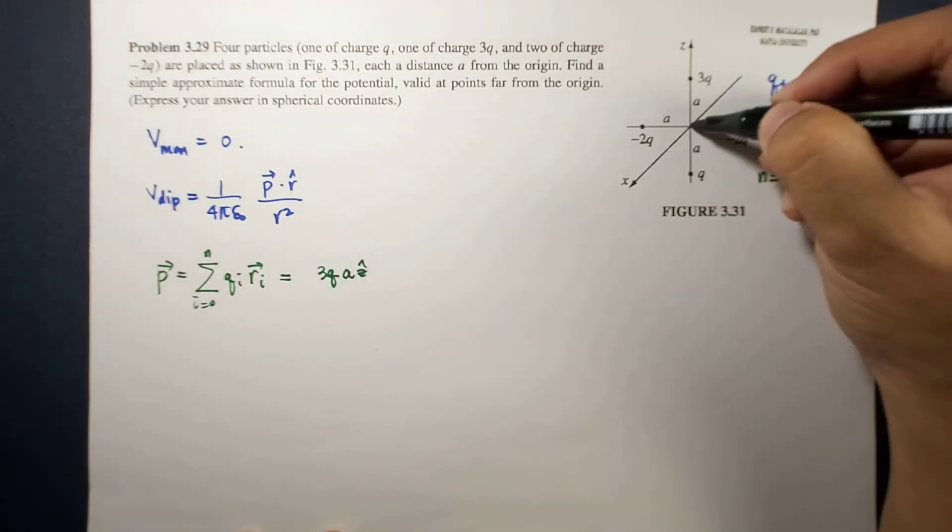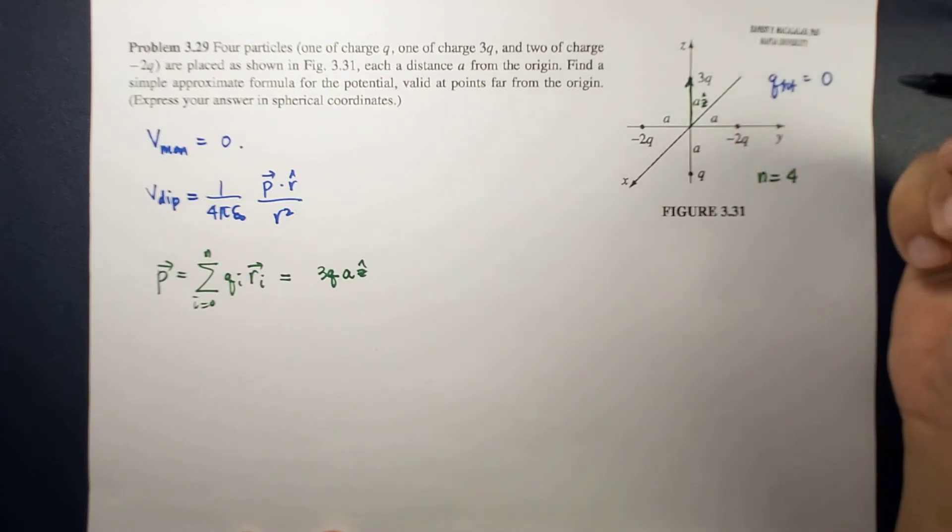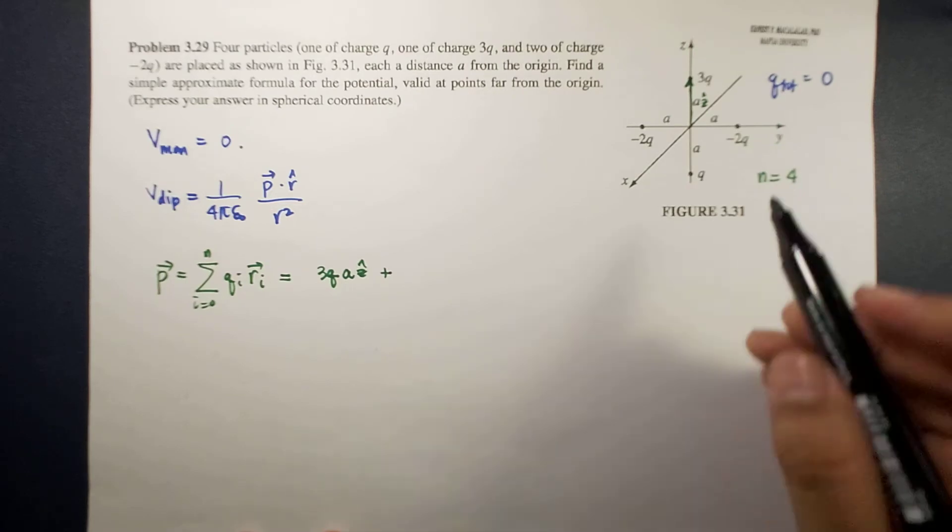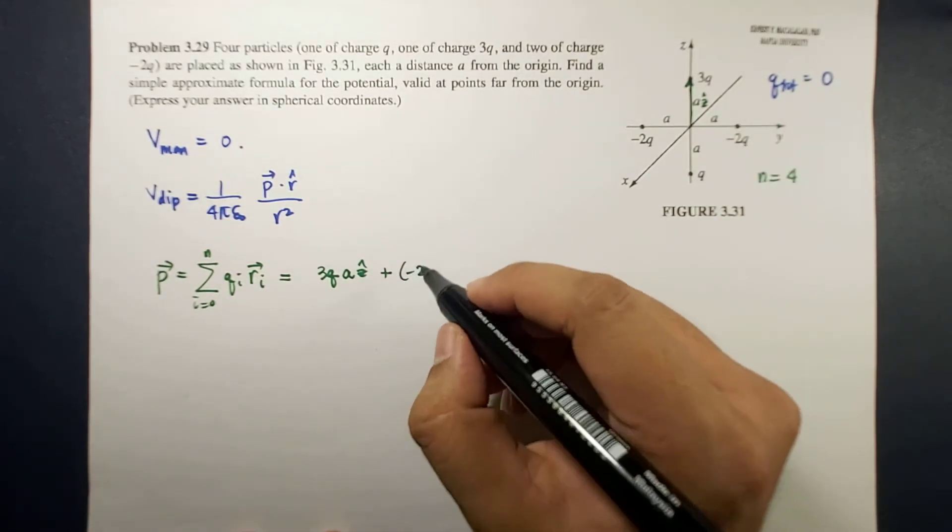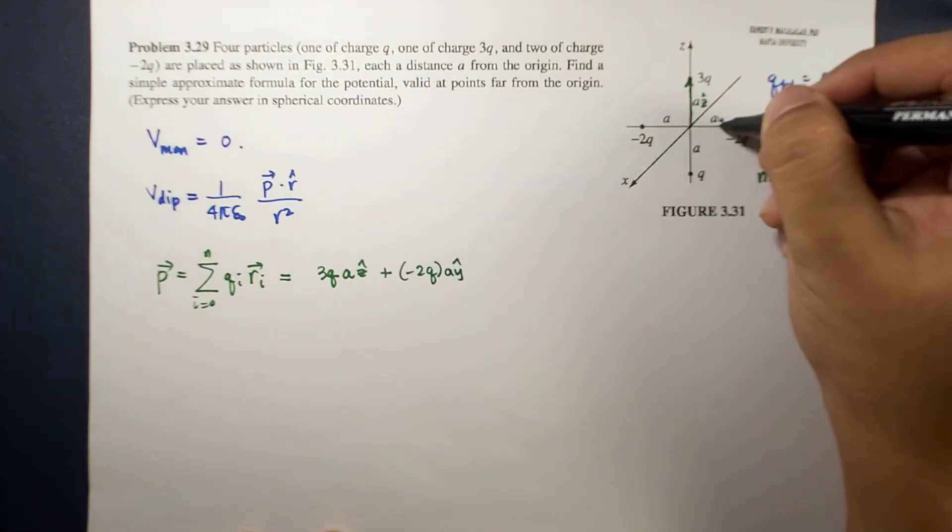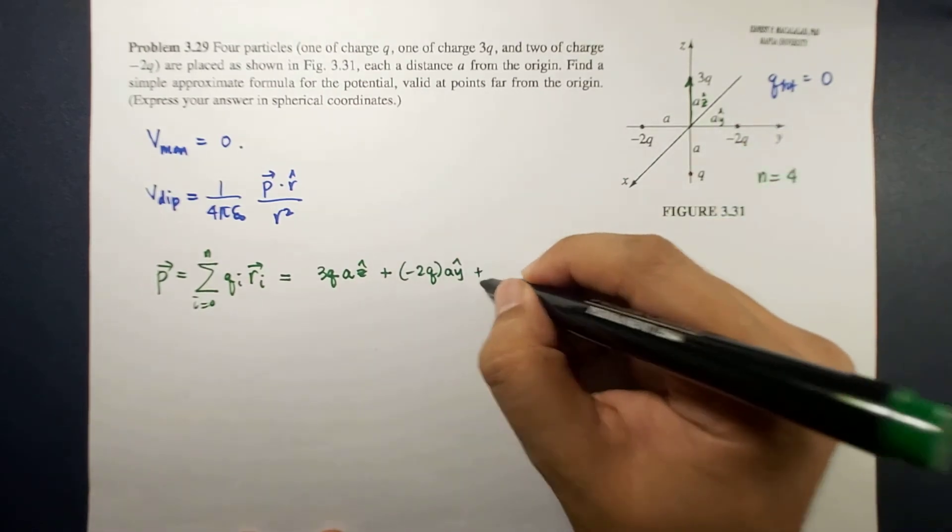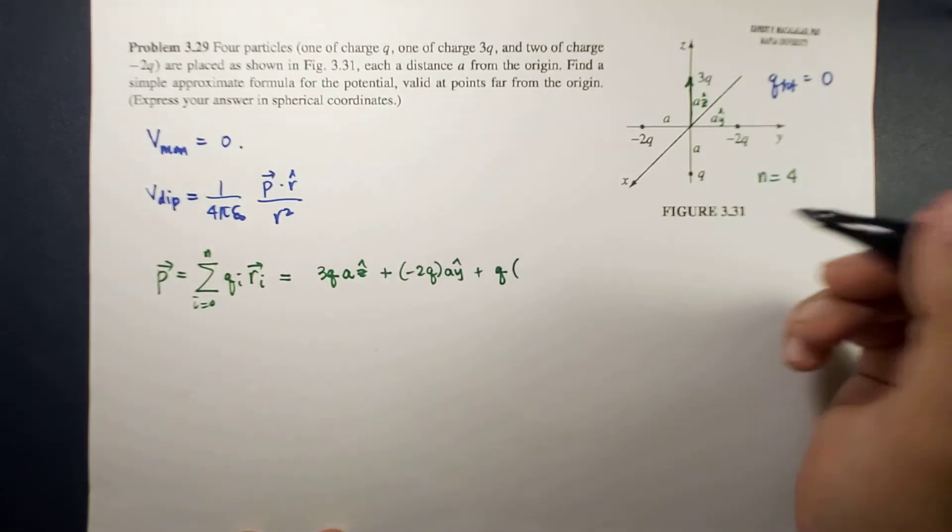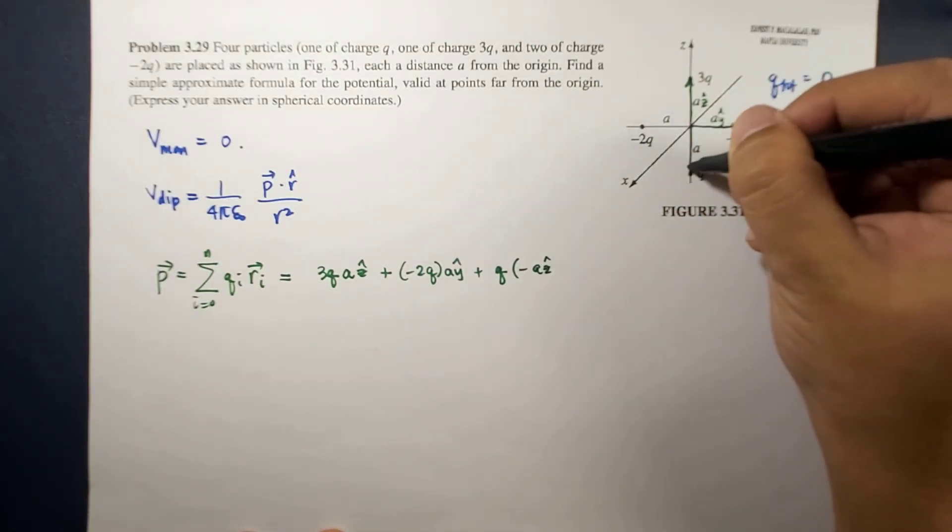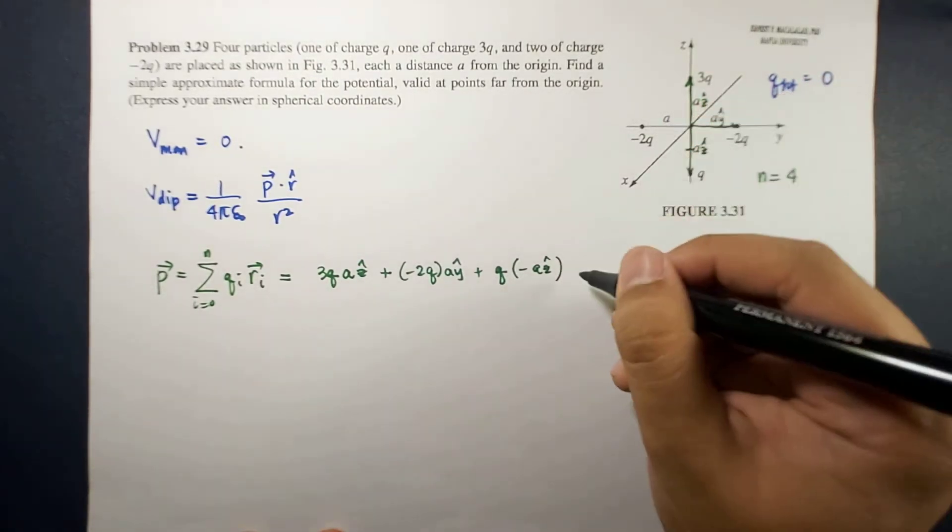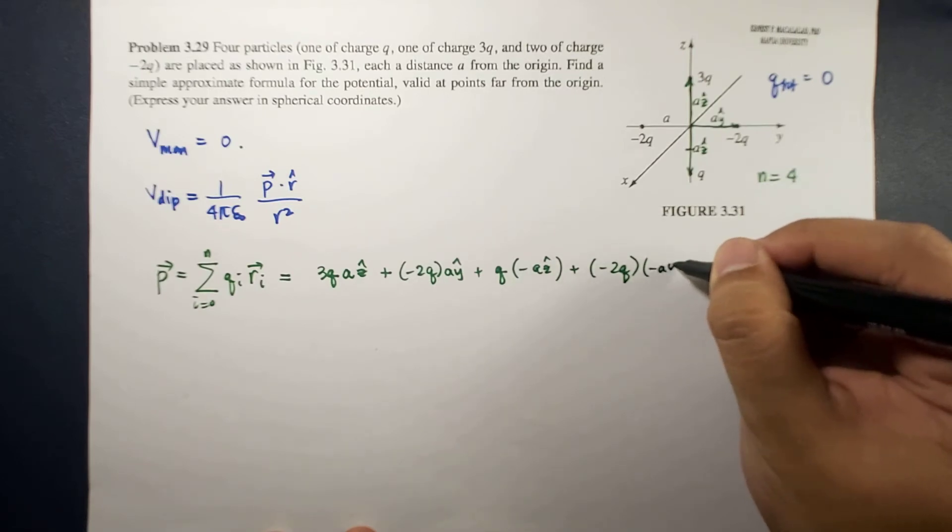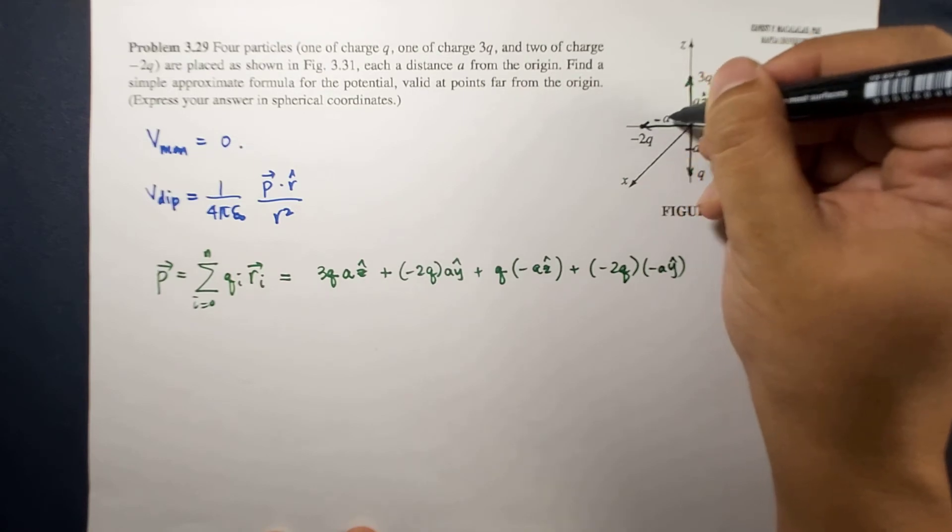Plus, this one is negative 2q times a y hat. Now below that's plus q times a z hat, and the last term is negative 2q times negative a y hat.